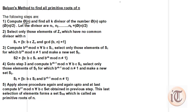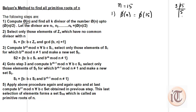Suppose we have to find the primitive root for n equals 15. We can use the Ballian method to find all the primitive roots. Step one is to compute phi of 15. Since 15 factors as 3 times 5, and both 3 and 5 are prime, we calculate phi(3) times phi(5), which is (3-1) times (5-1), giving 2 times 4, which equals 8. So phi(15) equals 8.